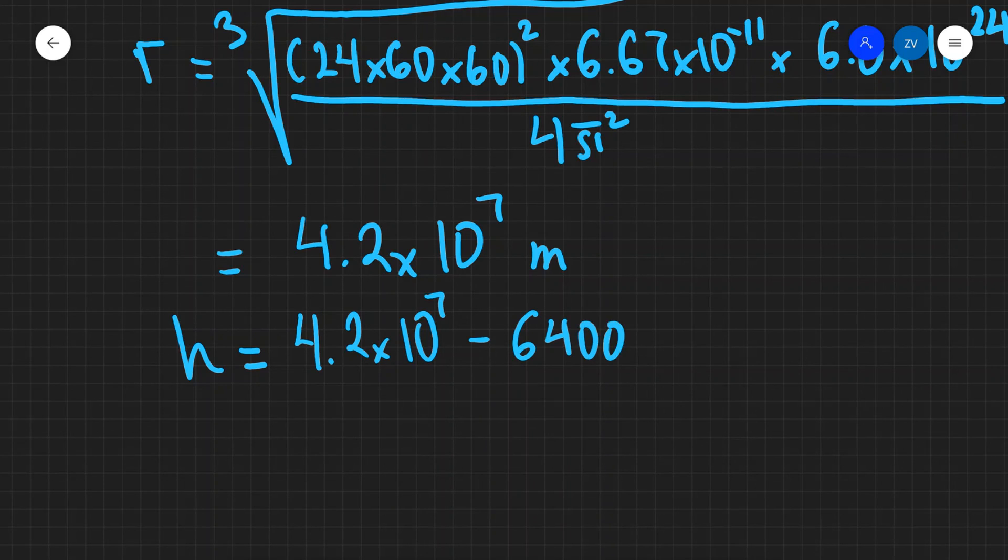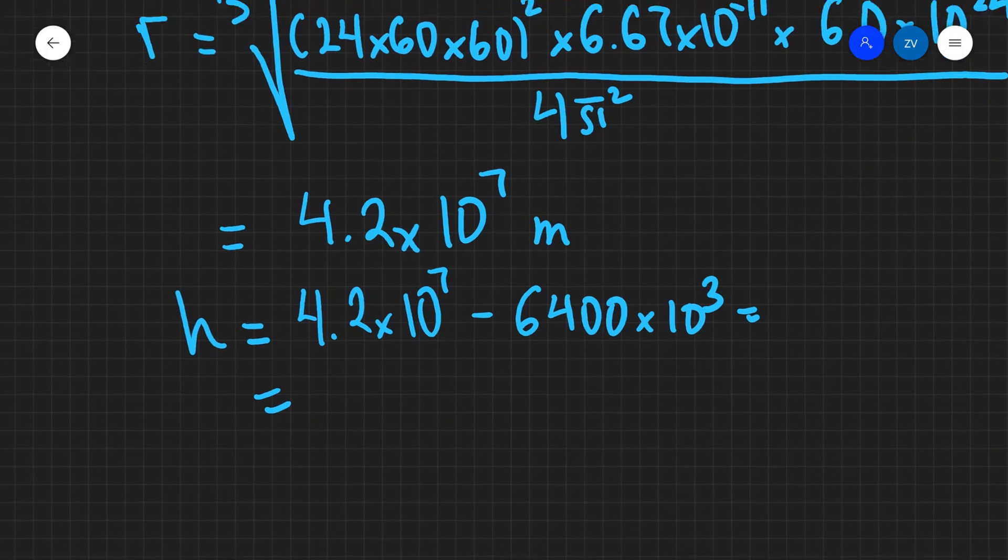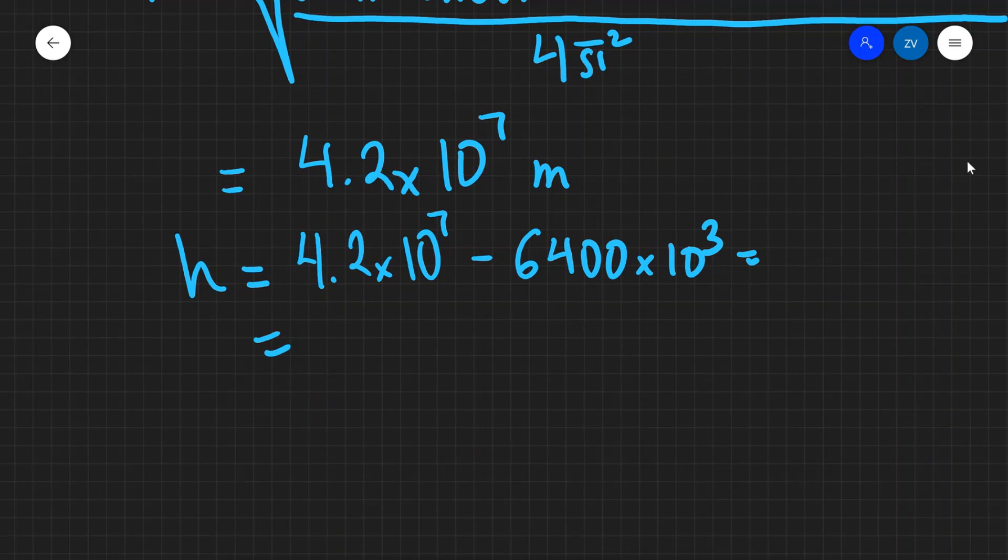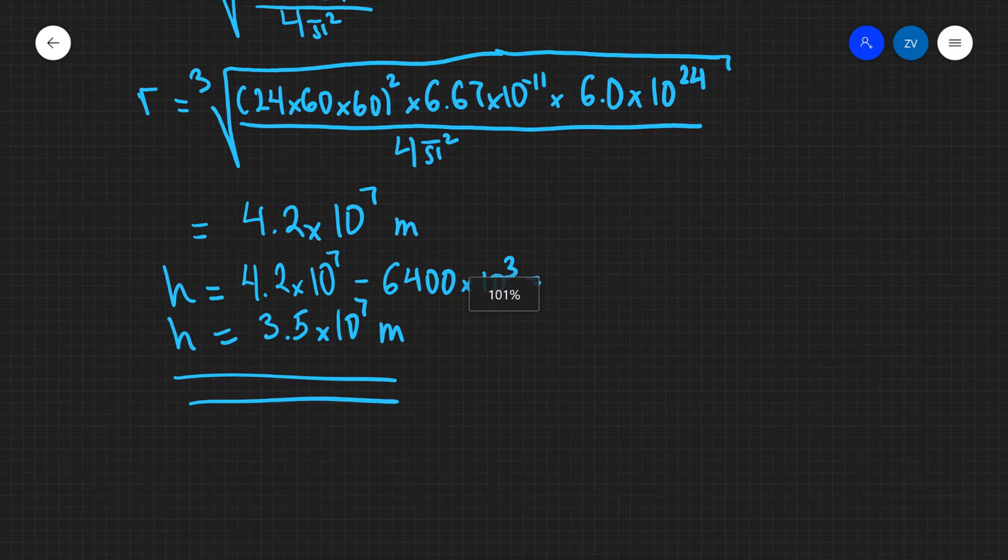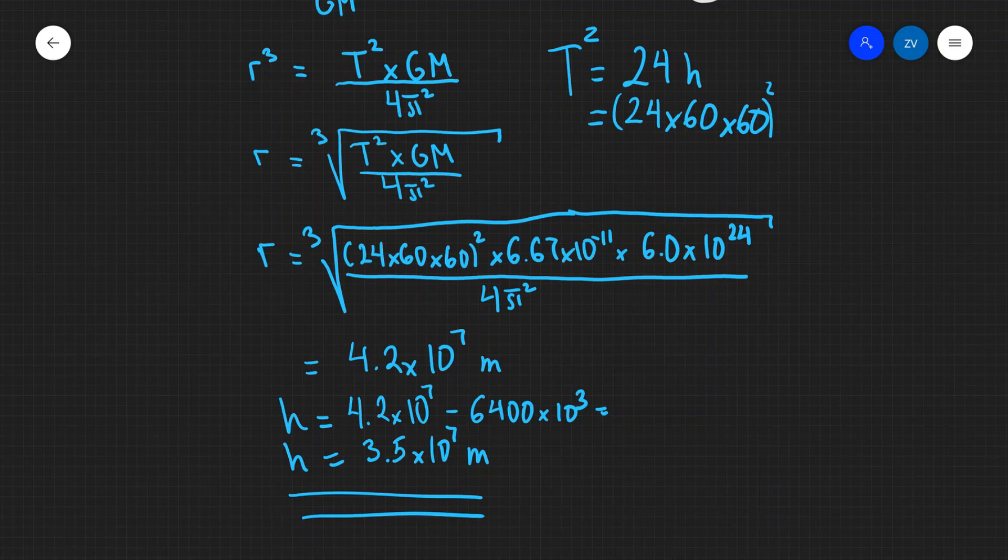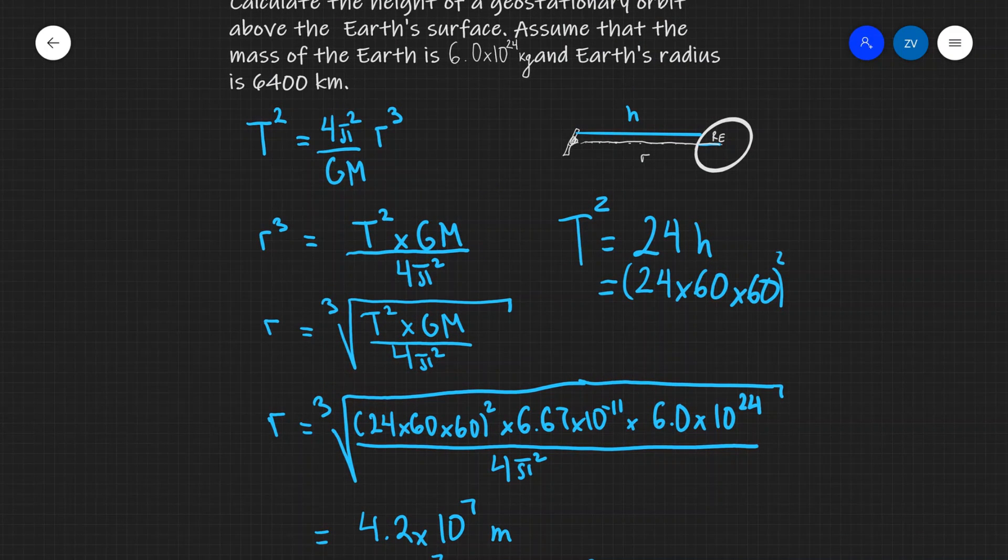So in other words, in order to find h, our height above the surface, will just be equal to 4.2 times 10 to the 7, take away the radius of the earth, which is 6,400 kilometers. Remember, kilo stands for 10 to the 3, so that's 6,400 times 10 to the 3, or 6.4 times 10 to the power of 6. And if we put that into a calculator, we can calculate that the height above the surface is approximately equal to 3.5 times 10 to the 7 meters.